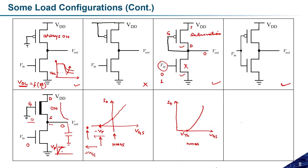Once it crosses the pinch-off point, it will be turned off and cannot charge further. The maximum voltage that can be charged on this capacitor is equal to the pinch-off voltage Vp. This means the maximum voltage achievable is Vp, and the minimum voltage is logic zero. The logic swing for this circuit will be between zero and the pinch-off voltage Vp, which is a very low voltage — so this will not act as an inverter.